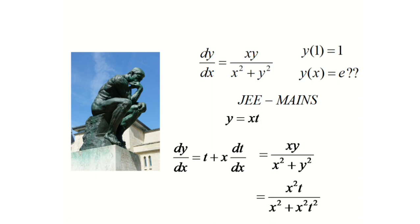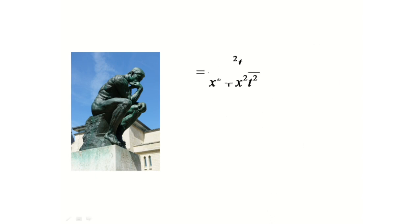Now, if we cancel out x square from numerator and denominator, we will get t upon 1 plus t square. So our equation will become t plus x dt by dx equals t upon 1 plus t square.